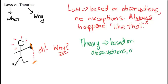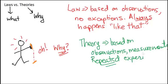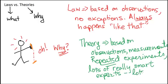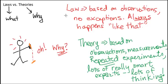A theory is based on many things: observations, measurements, experiments, repeated experiments. And basically we come up with a guess. Lots of really smart people, experts in the field, spend lots of time thinking about what's going on and devise the reason why.